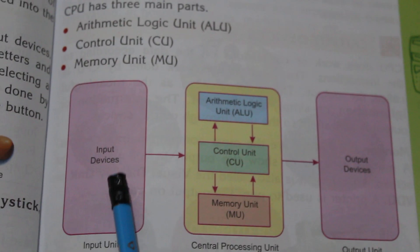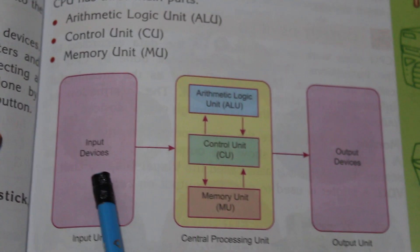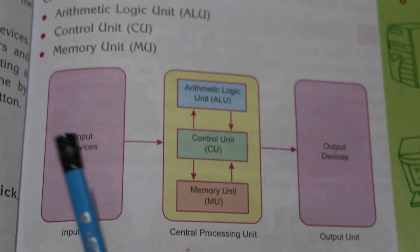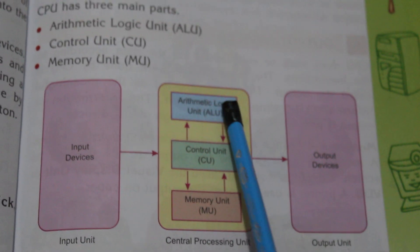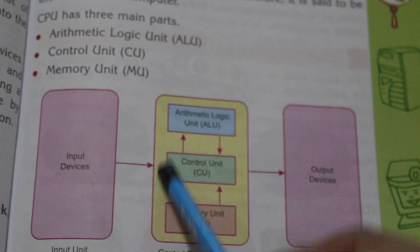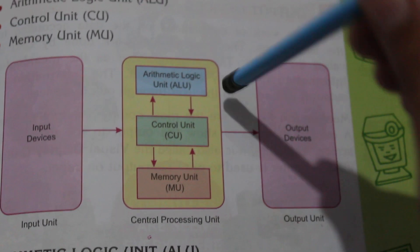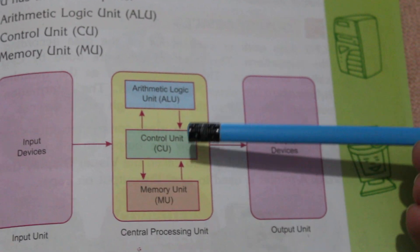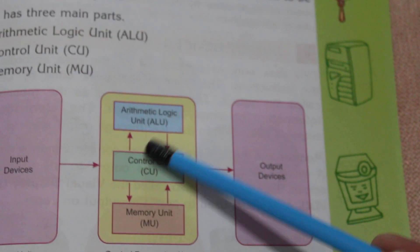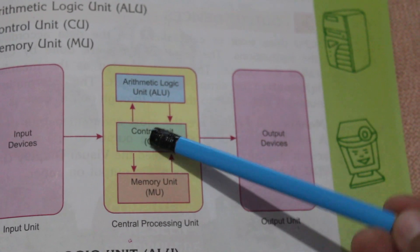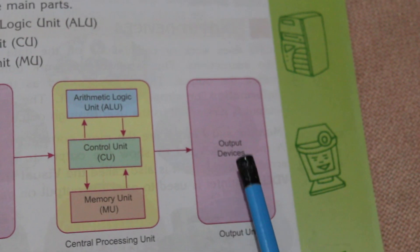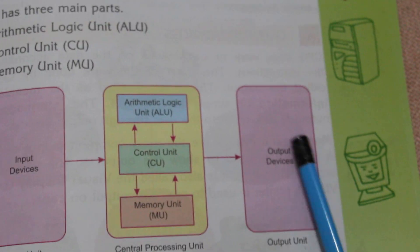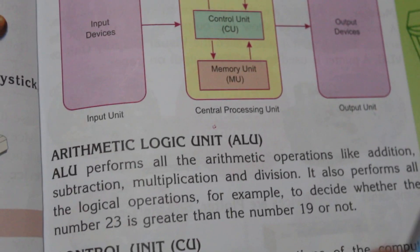Here is a diagram: input devices like keyboard and mouse feed into the Central Processing Unit. Inside the CPU there are three main parts — the Arithmetic Logic Unit, the Control Unit, and the Memory Unit. From the CPU we get our output through output devices like a monitor or screen.